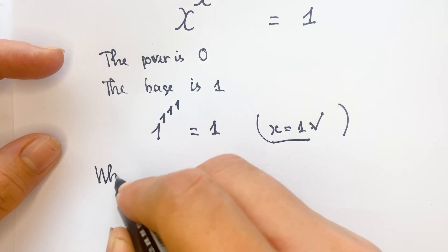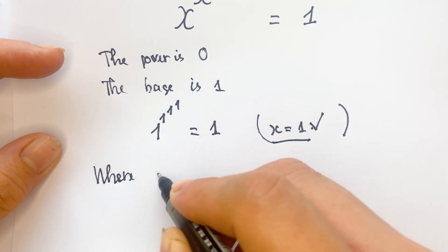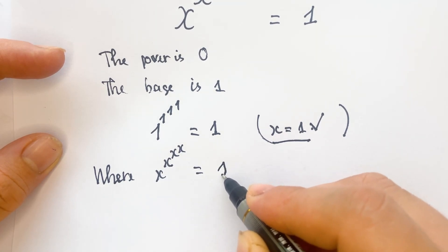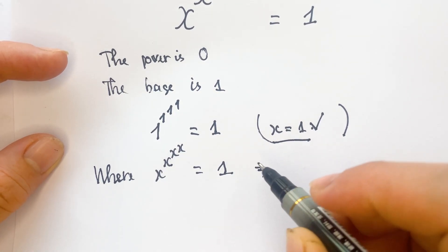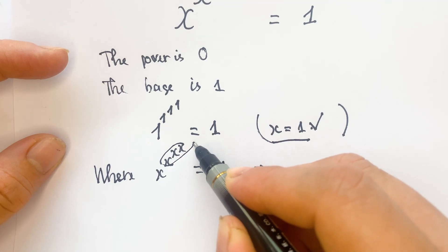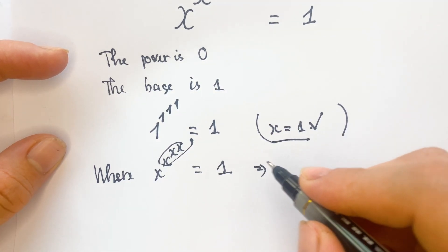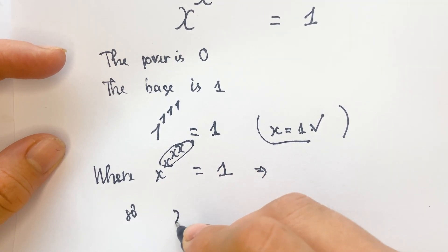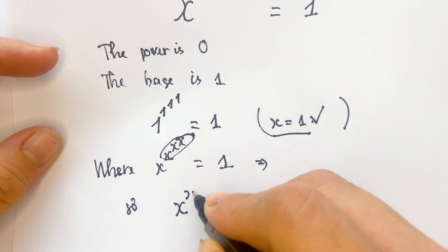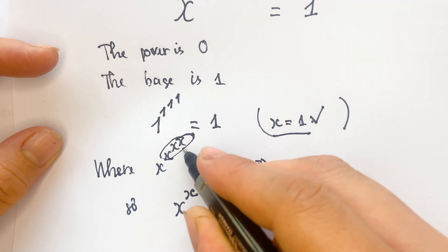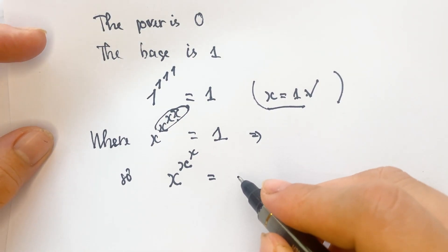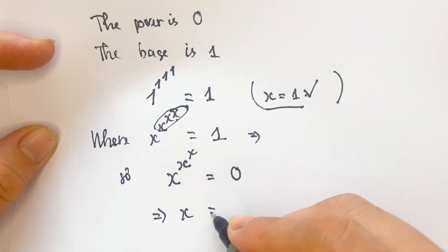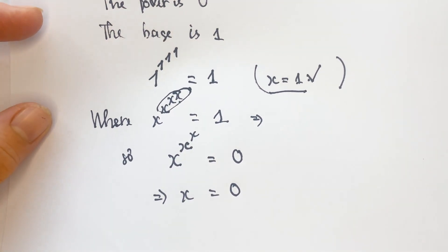Now, when x power x power x power x equals 1, the exponent must be 0. Therefore, we need x power x power x to equal 0, which means x = 0.